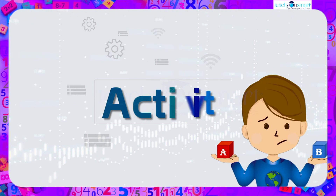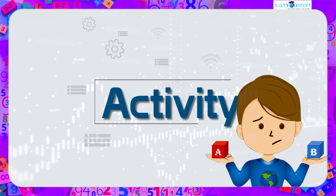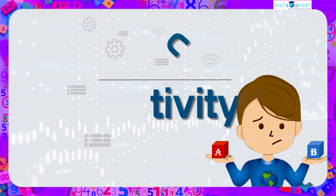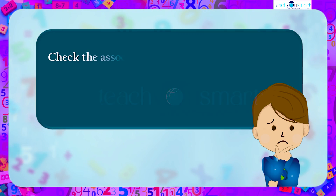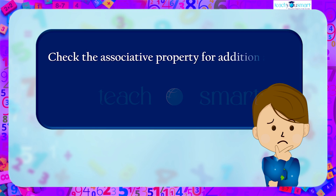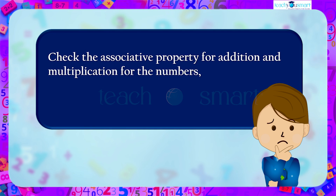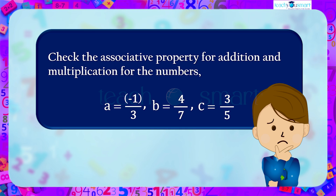Now let's check how much you understood by doing an activity. Check the associative property for addition and multiplication for the numbers: a = −1/3, b = 4/7, and c = 3/5.